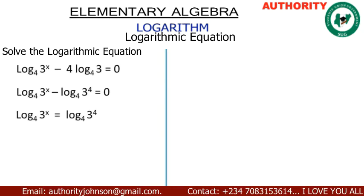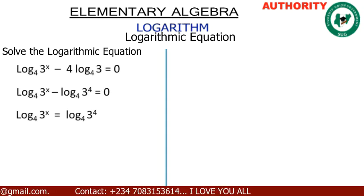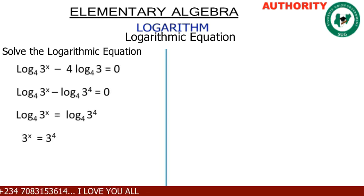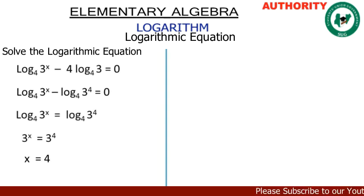Since both sides have the same log base 4, we can cancel the logarithms. We are left with 3 raised to power x equals 3 raised to power 4. Since the bases are the same, under indices we can cancel the base, giving us x equals 4.